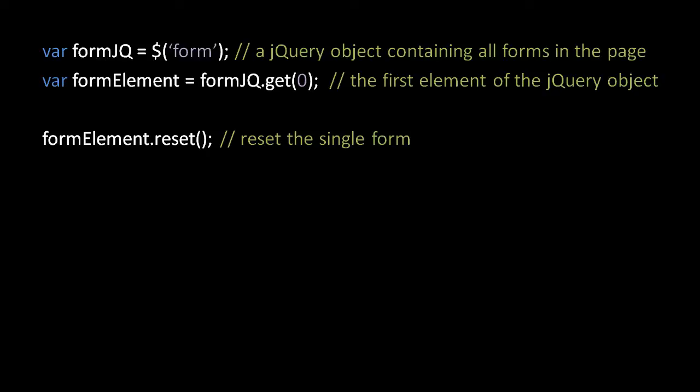If you want to get an individual DOM element out of a jQuery object but then have that DOM element wrapped as a jQuery object, you can simply pass that object to the jQuery constructor to get a new jQuery object wrapping that individual DOM element.